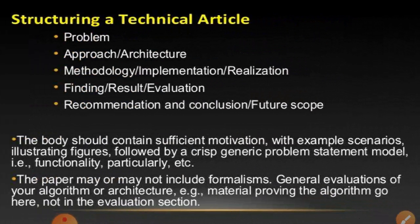The structure of a technical article includes: Problem, Approach, Architecture, Methodology, Implementation, Serialization, Finding/Result, Evaluations, Recommendation and Conclusion, and Future Scope. The body should contain sufficient motivation with examples, scenarios, and illustrating figures, followed by a crisp generic problem statement, model, and functionality. The paper may or may not include formalization or general solutions of your algorithm or architecture; material providing algorithmic details goes here, not in the earliest section.